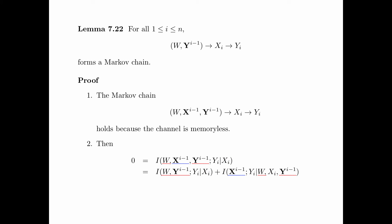Now, we restore the conditioning random variable X_i. Because the sum of these two mutual informations is equal to zero, and the mutual information is always non-negative, we see that both mutual informations are equal to zero. In particular, the first mutual information, namely I(W,Y^(i-1);Y_i|X_i), is equal to zero, which is equivalent to the Markov chain W, Y^(i-1), X_i, and Y_i. This proves the lemma.